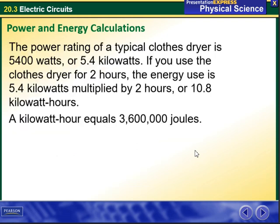So energy equals power times time. The power rating of a typical clothes dryer is 5400 watts or 5.4 kilowatts. If you use the clothes dryer for 2 hours, the energy used is 5.4 kilowatts multiplied by 2 hours.